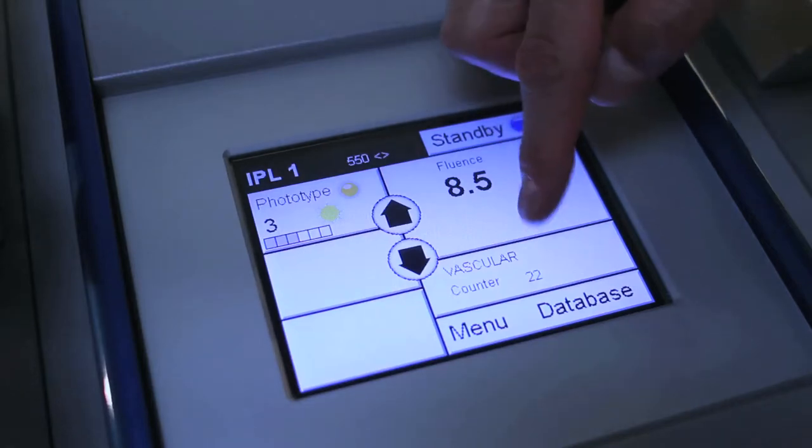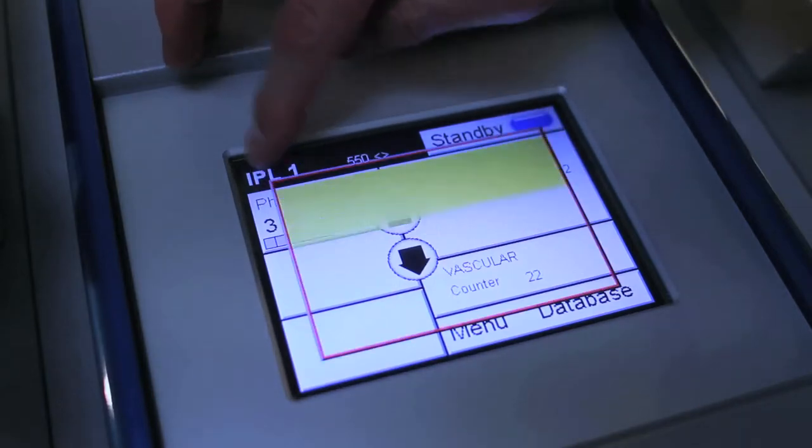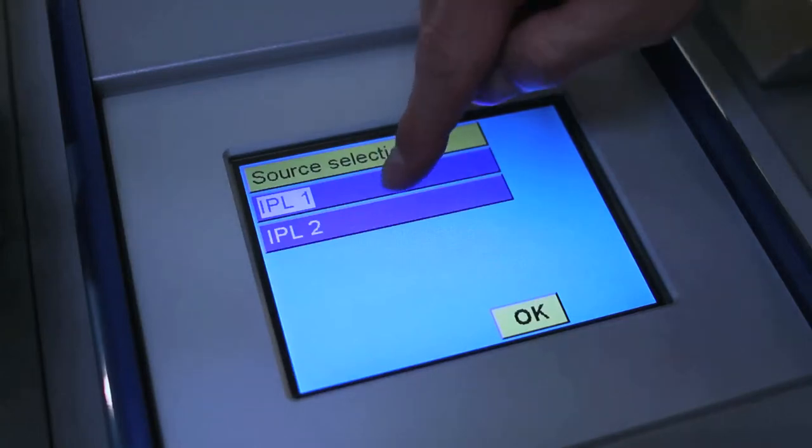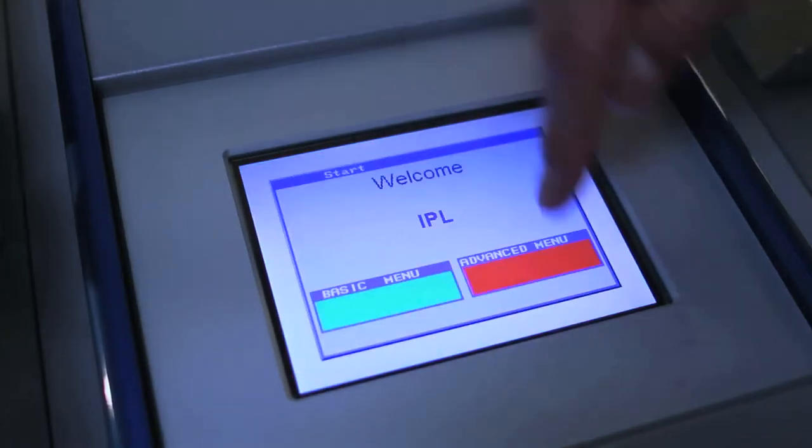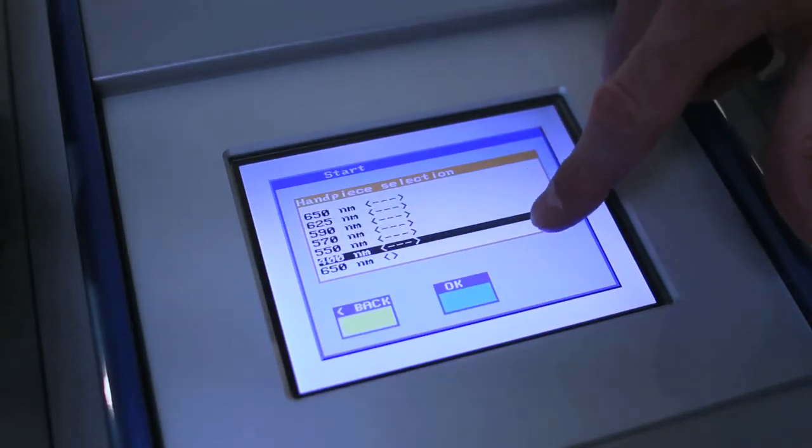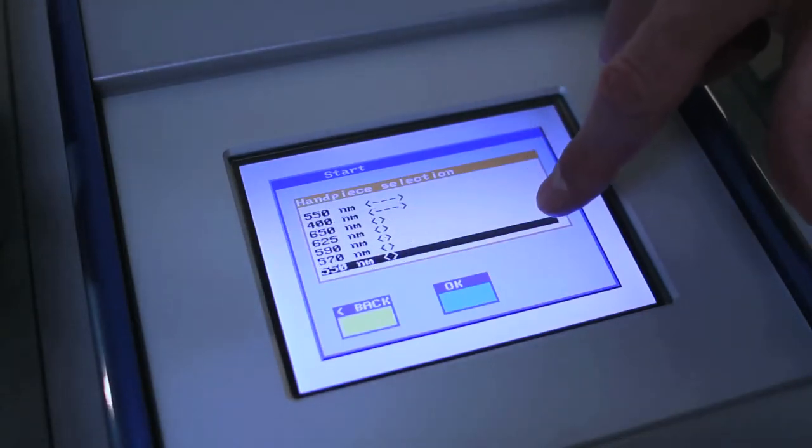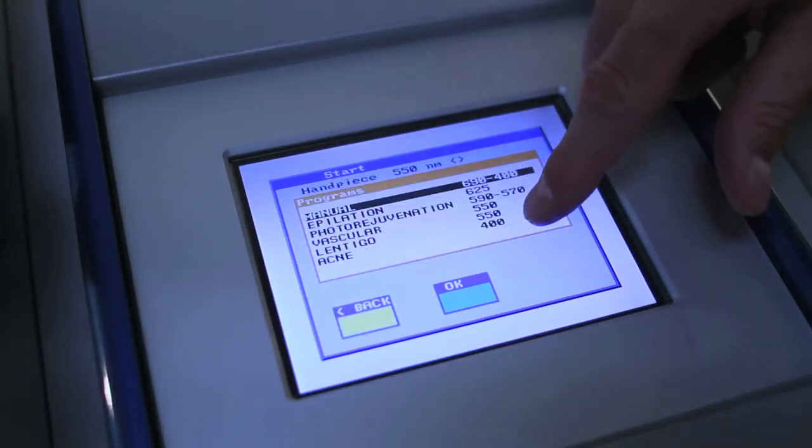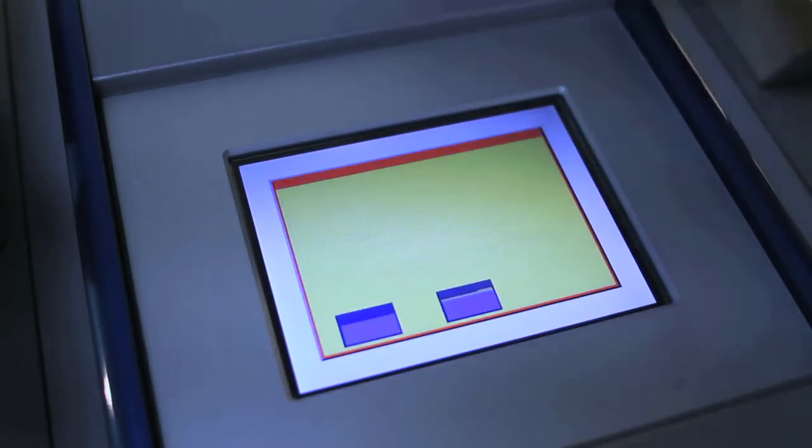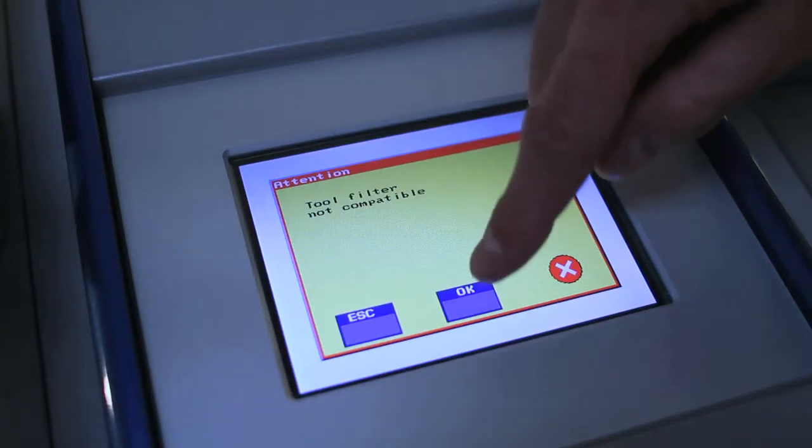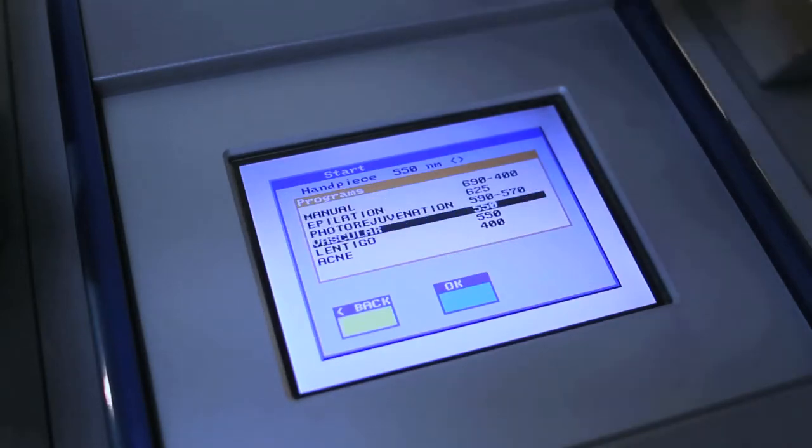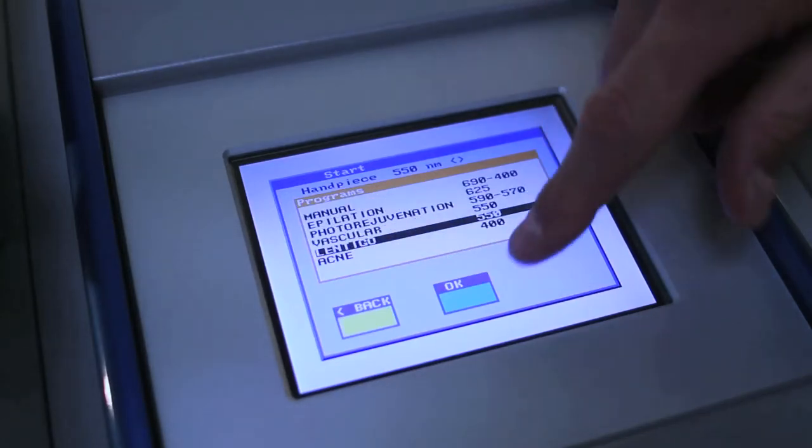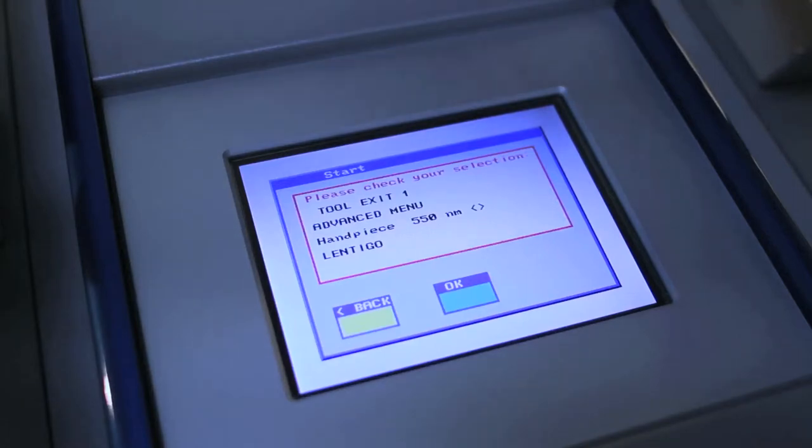If you go back and you want to change a selection, we still say IPL number one, but we want to go to the advanced menu. You tab through here until you get to the same 550 filter, and let's say photo rejuvenation or choose lentigo this time. It doesn't let you do this if you have the wrong filter in.